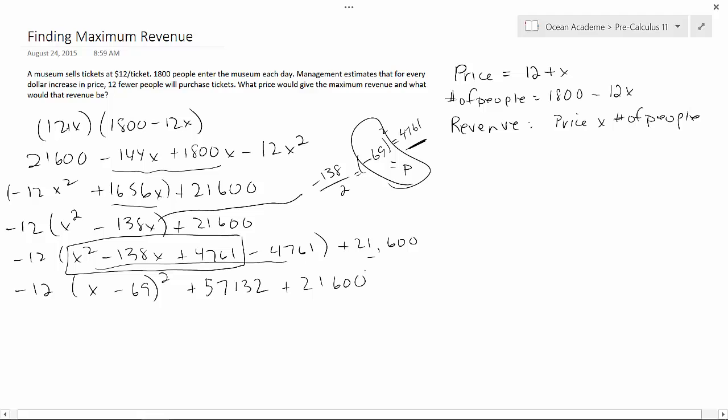Okay, now simplifying again, minus 12 times X minus 69 squared plus, now those two added together, are 78,732. Now, that's as far as we can go. So what does this tell us?